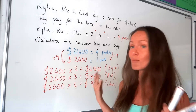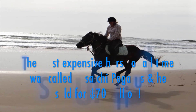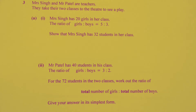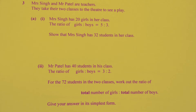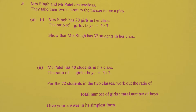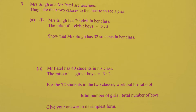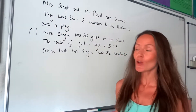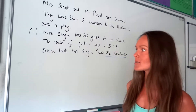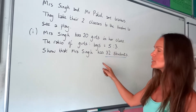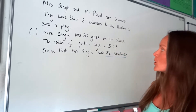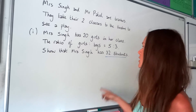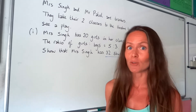So we've worked out how much each of them pays for the horse. In this next exam question, there are two parts. In the first part, we have to show that Mrs. Singh has 32 students in her class. Watch out for these 'show that' questions — you can't use the number 32 during your calculation; you just use it to check your final answer. So you work out the total number of students, and hopefully your final calculation will give 32.